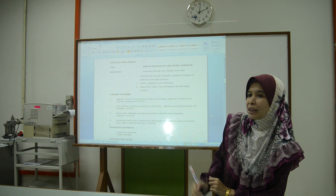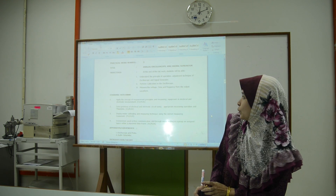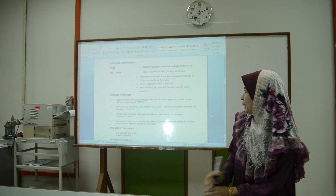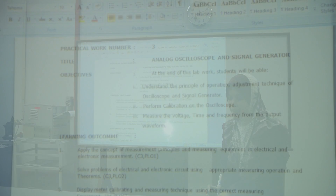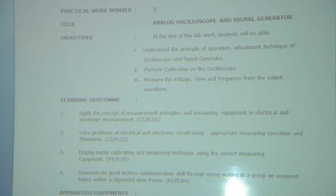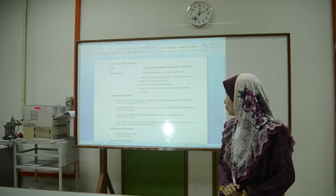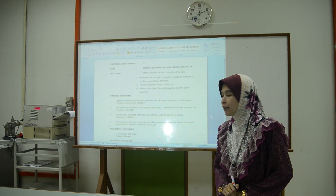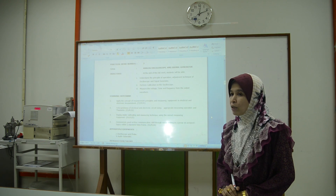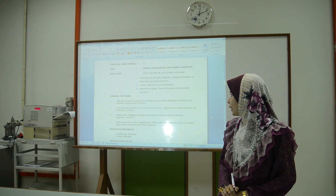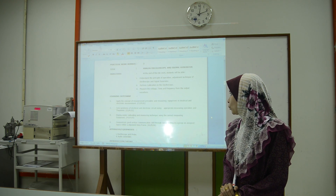The objectives for today: number one, understand the principle of operation and operating technique of the oscilloscope and signal generator. Second, perform calibration on the oscilloscope. And number three, measure the voltage, time, and frequency from the output waveform.